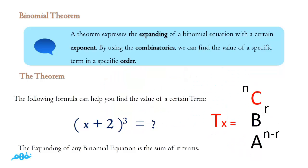First of all, what is the Binomial Theorem? It is a theorem expressing the expansion of a binomial equation with a certain exponent or power. By using combinatorics, specifically the combination C, we can find the value of a specific term in a specific order.